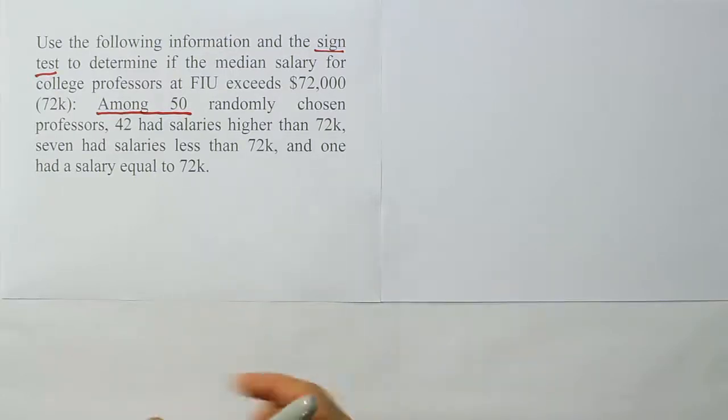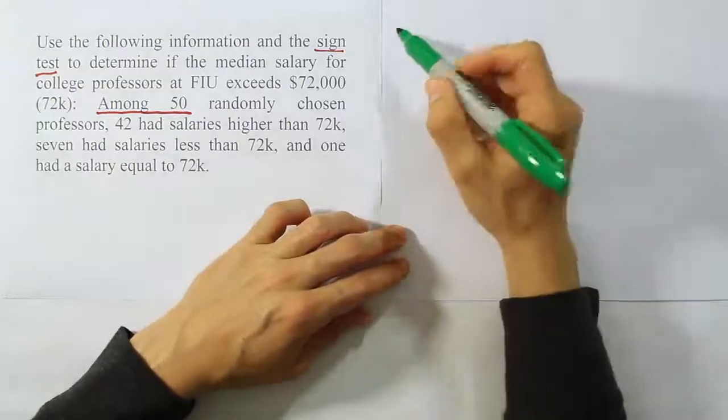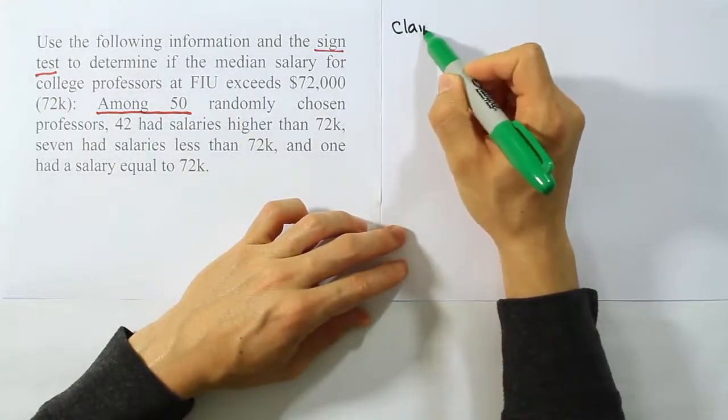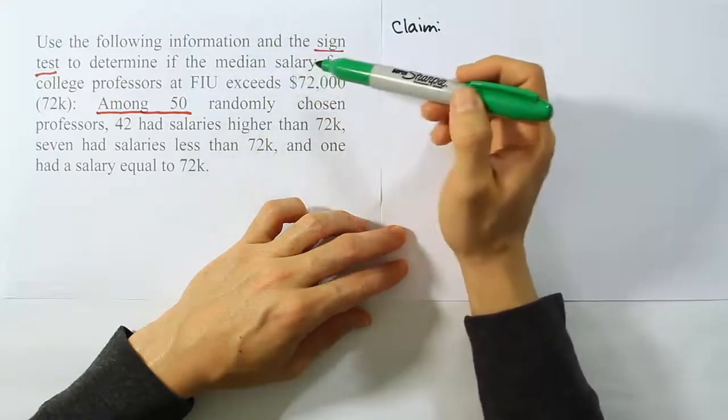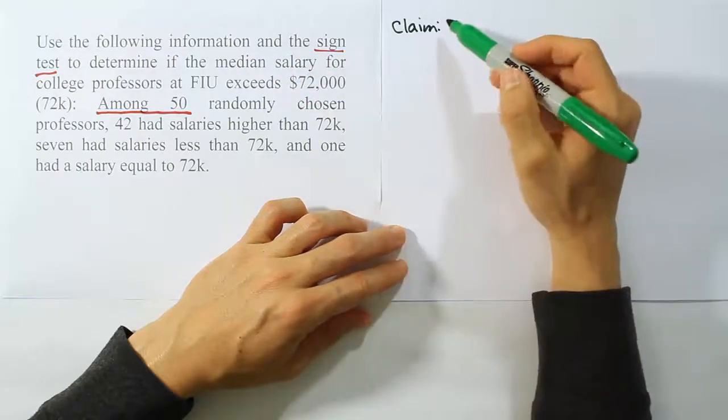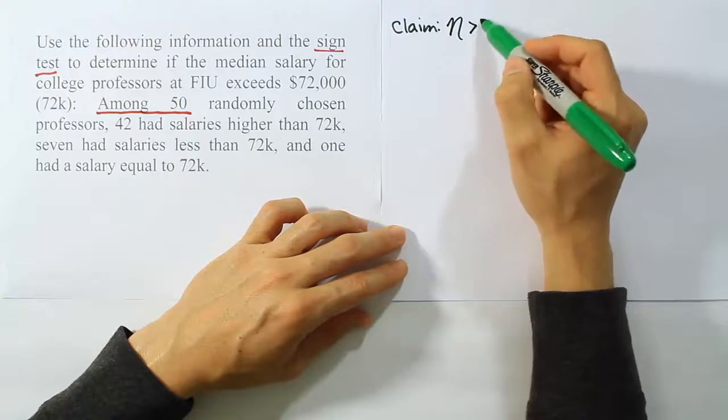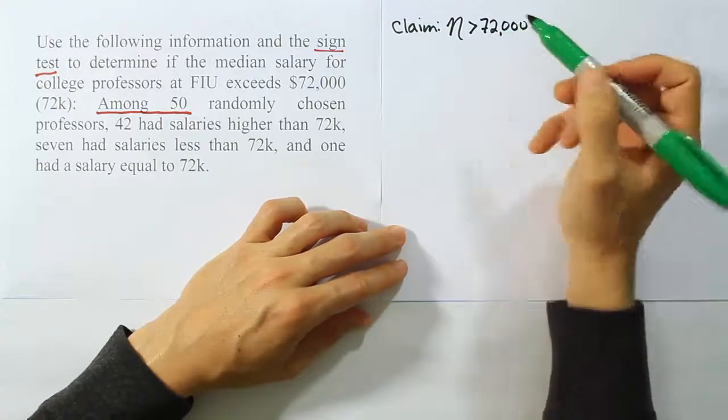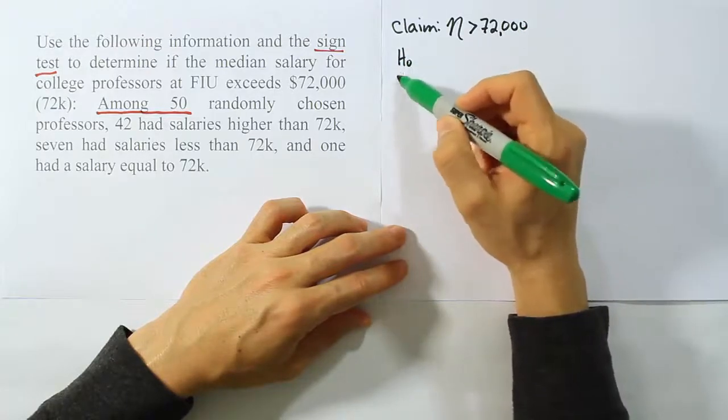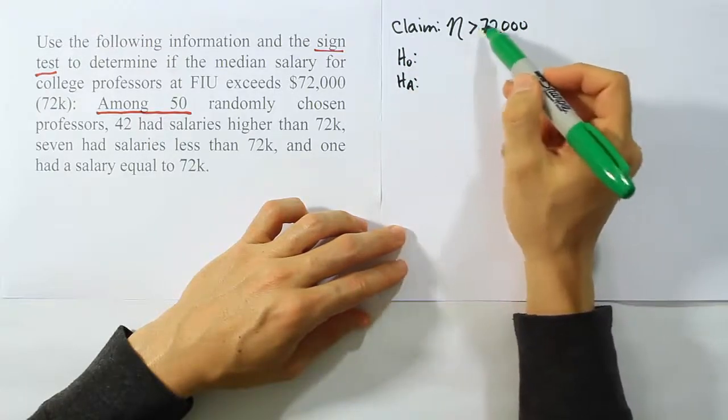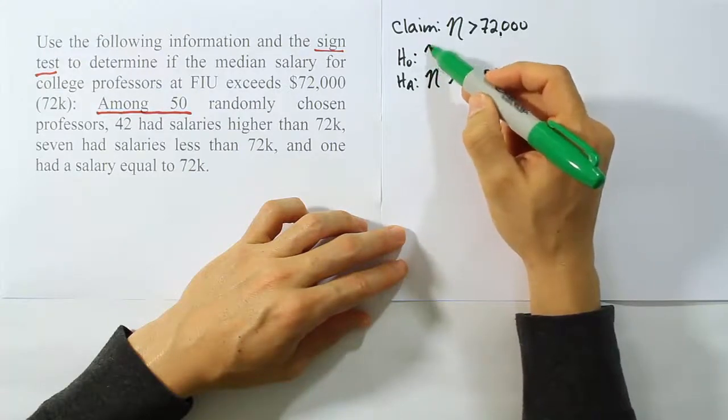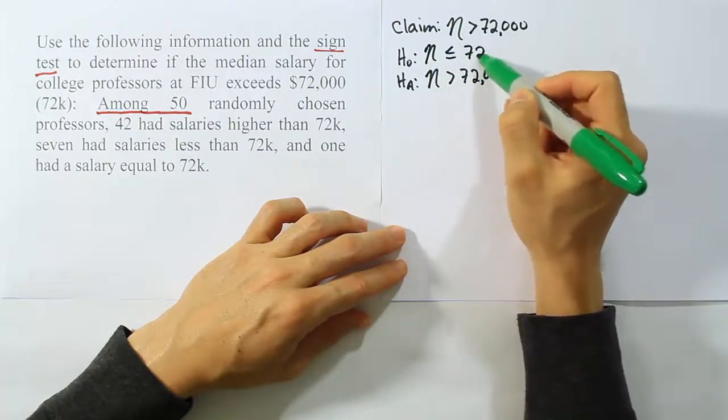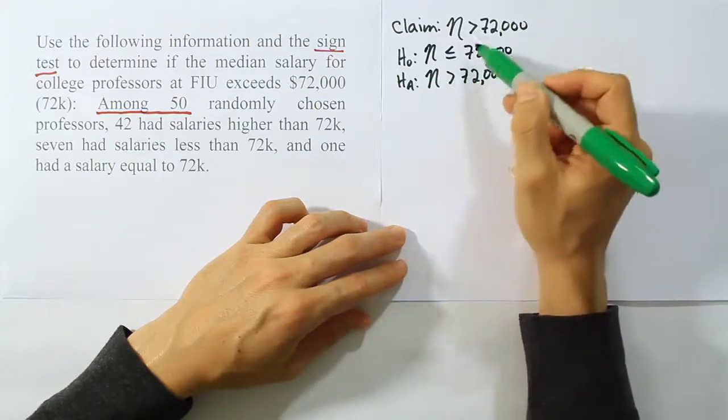First I've got to get my claim and my test stat and all that stuff. The claim here is use the sign test to determine if the median salary for a college professor at FIU exceeds, so that means the median is greater than $72,000. H0 and HA are done in the normal way we always have done. Greater than would mean that the claim is HA, and H0 would be that the median is less than or equal to $72,000, just the opposite idea that HA and the claim are expressing.